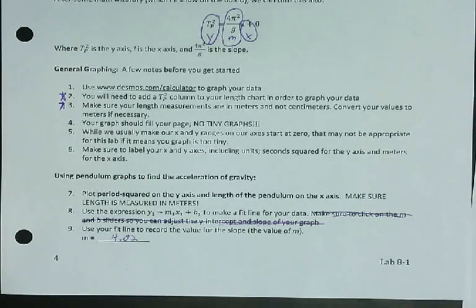You're going to put length in the x column. You're going to put period squared in the y column. Then you're going to use your y1 tilde m1 x1 plus b1 equation. And you're going to plot your graph.